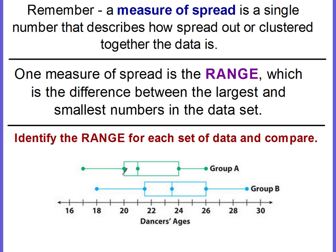Range is simply high minus low. The highest number for group A is 26, because this is the maximum value, and the minimum value is 17. So to find the range, we subtract the two and the range is nine years. For group A, there's a range of a nine-year age difference.